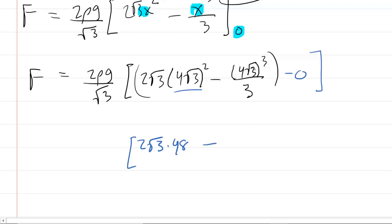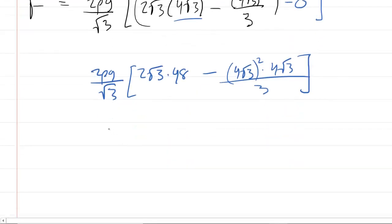And then over here, four radical three cubed. That's fun, isn't it? So four radical three. That's the same thing as four radical three squared times another four radical three. Now, four radical three was just 16 times three, which is 48. 48 times four is 192. So this is getting rather messy, isn't it? So it's two rho g over radical three.